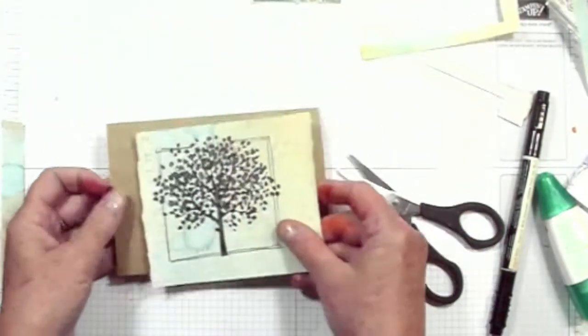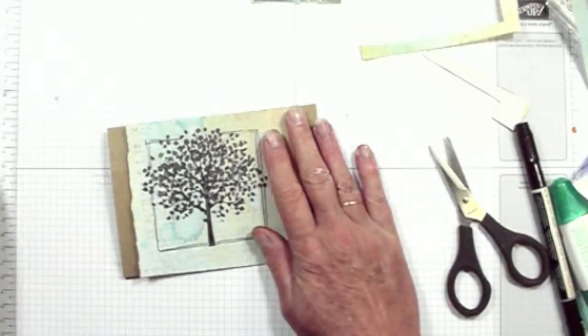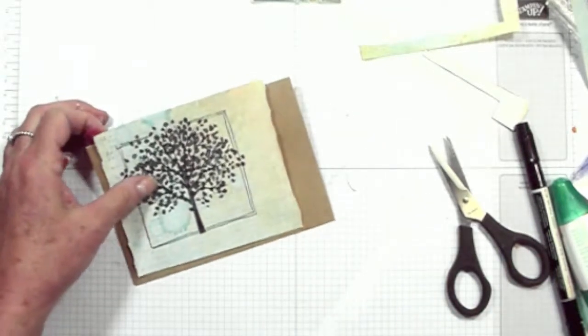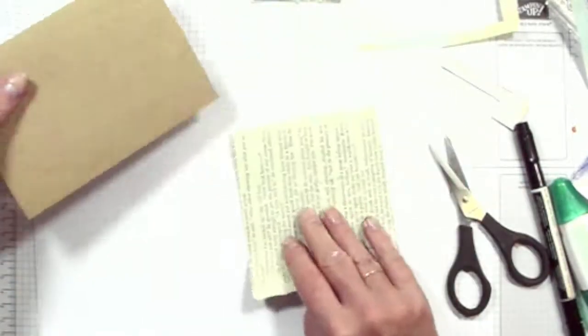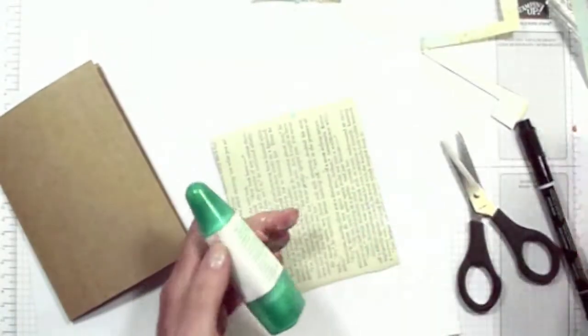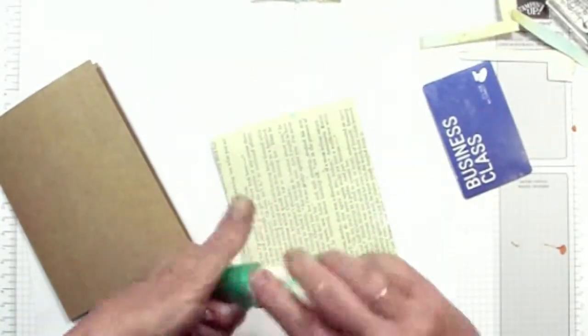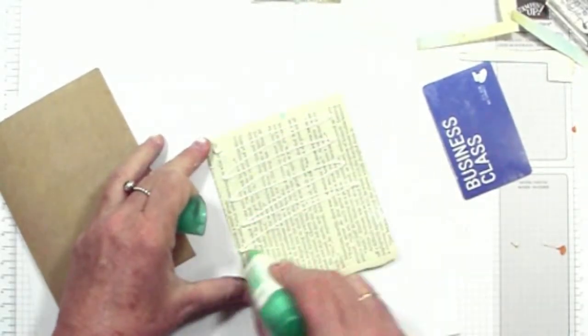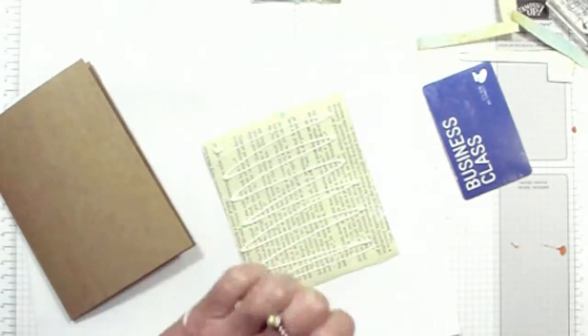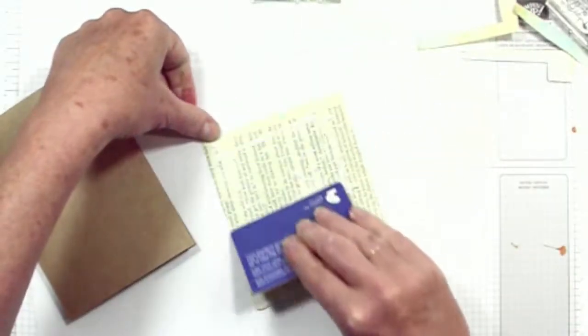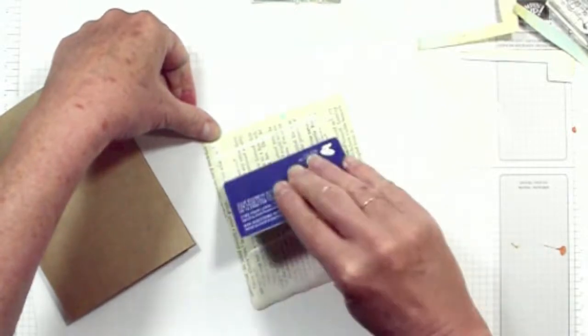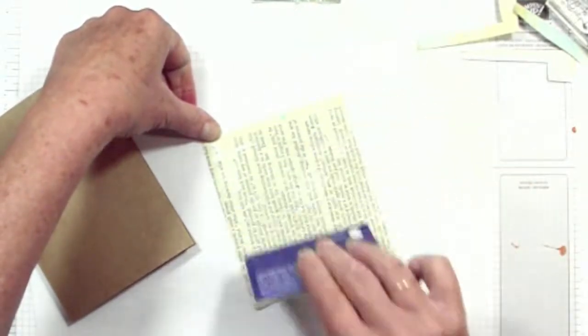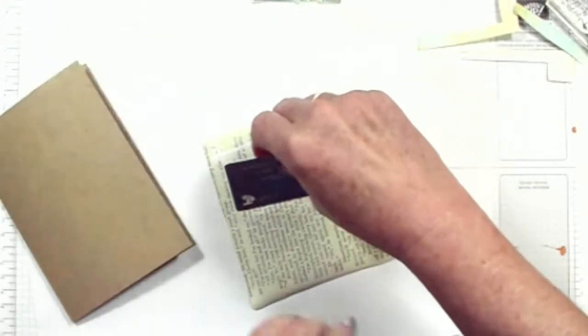Pop that aside for a minute and we're going to apply this piece to our card front. Again you'll need a little bit of scrap paper, your glue, and the credit card. This time we'll need quite a bit more glue. And we do want to get to all of the edges. So try not to move the text paper otherwise it will glue to your scrap paper. And we don't want that.